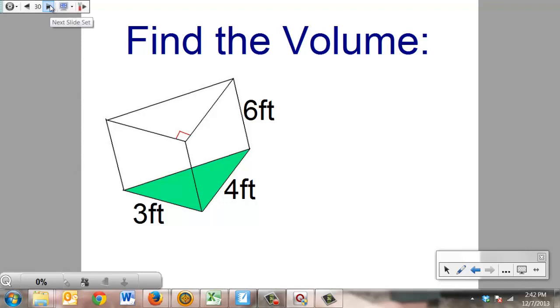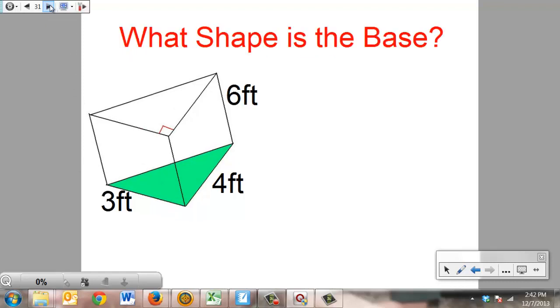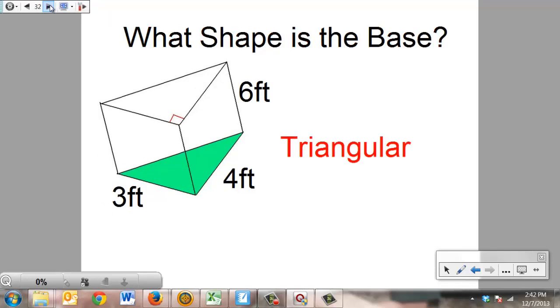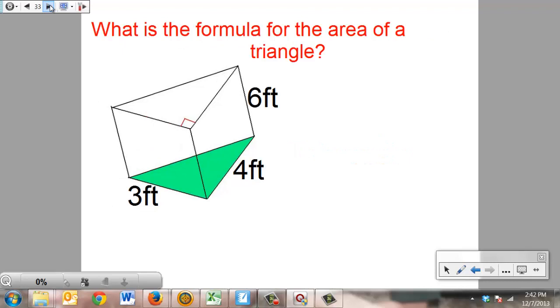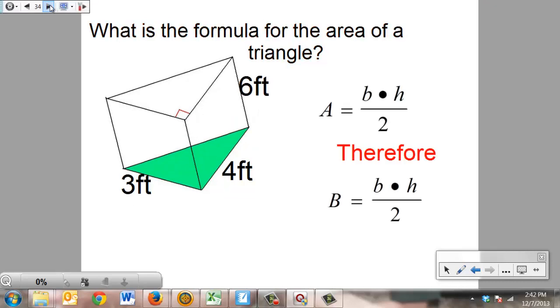Let's take a look and see what you came up with. First thing we had to ask ourselves is what's the shape of the base, and the base is obviously triangular. Since we have a triangular base, we can say, what's the formula for the area of a triangle? Think about it, that you should already have written on your paper would be area equals base times height divided by 2. Therefore, we can say that base area is also equal to base times height divided by 2.